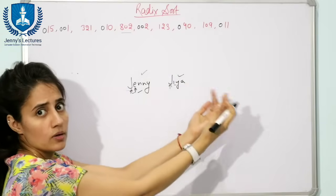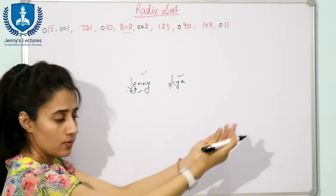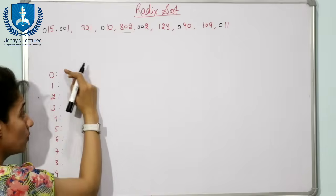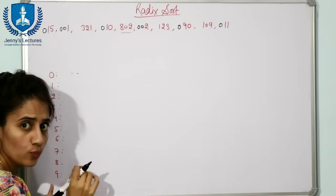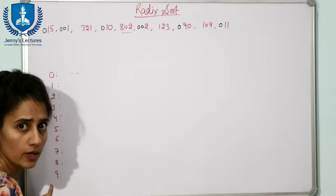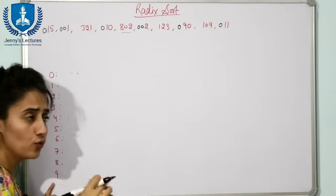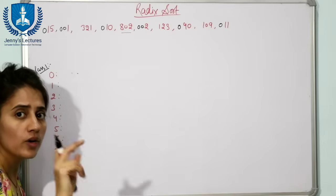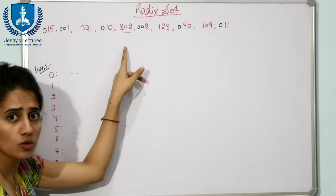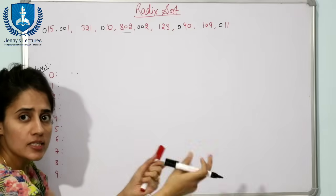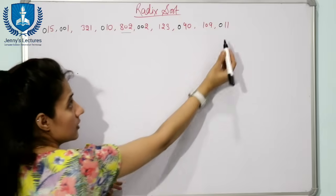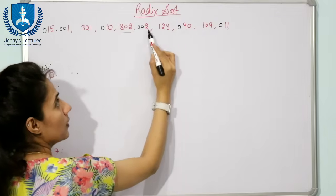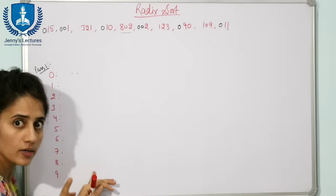In the case of numbers we check from the least significant digit. We take 10 buckets ranging from 0 to 9 and put the numbers into these buckets. This is Pass 1: we sort the numbers according to the least significant digit and check that digit for every number.